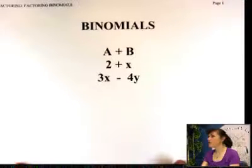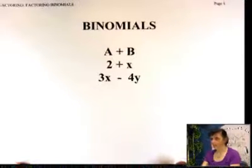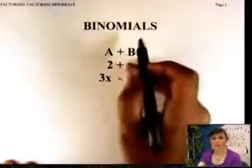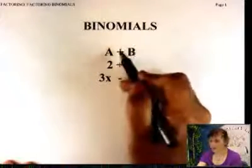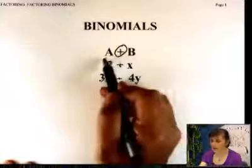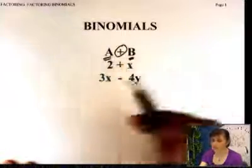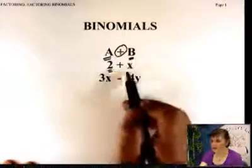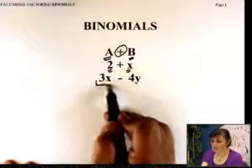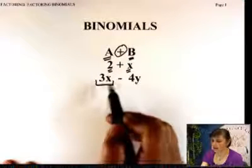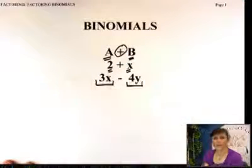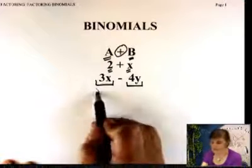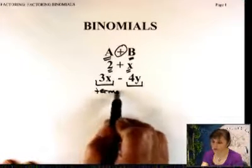Let's start with what's a binomial. A binomial is a polynomial with two terms. Terms are separated by either a plus or a minus. Here's a binomial — there are two things in there. And these things that I call things are terms.